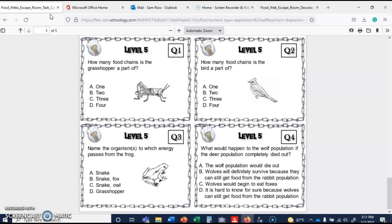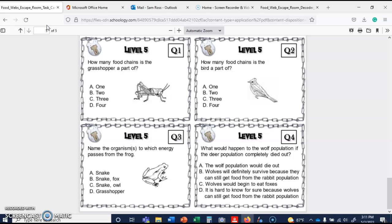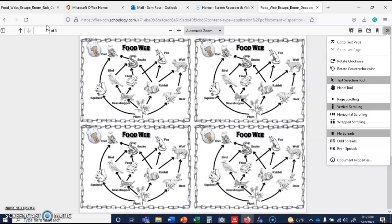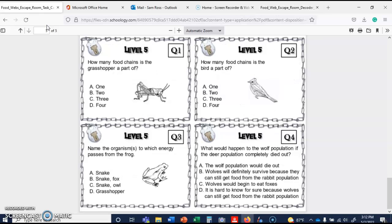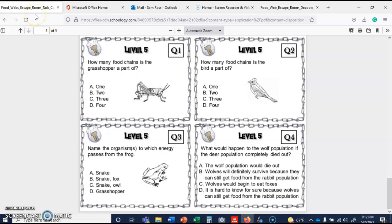Level five. Name the organism to which energy passes from the frog. So what eats the frog? The snake eats the frog. So that's going to be, what else eats the frog? Does anything else eat the frog? Wait a minute. The snake and the fox. I did not even see that arrow. So that's going to be B. And then the last question, it says, what would happen to the wolf population if the deer population completely died out? So deer here, if deer goes away, what happens to the wolf population? The wolf population would die out. The wolves would definitely survive because they can get food from the rabbit population. Wolves would begin to eat foxes. It's hard to know for sure because wolves can still get food from the rabbit population. So the answer to that is D.